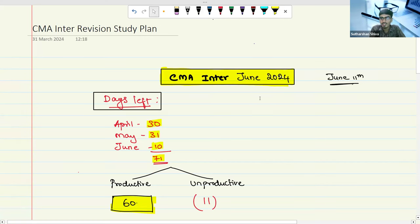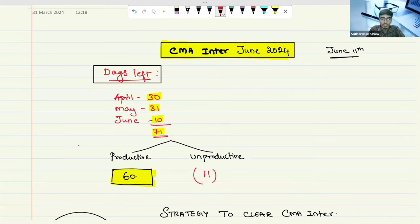Now, on those 71 days, we have bifurcated into two types: productive and unproductive days. We may not continuously study for 71 days. We need to take some breaks. We have some festivals. In between, we need to focus on some areas. So we have taken 60 full days for your preparation and left 11 days as unproductive days or breaks.